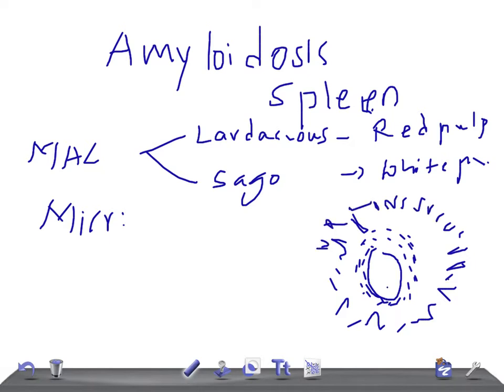To recap: the lardaceous spleen shows diffuse map-like areas of pale waxy translucency on cut surface. The sago spleen shows multiple pale foci corresponding to the regions of splenic follicles.